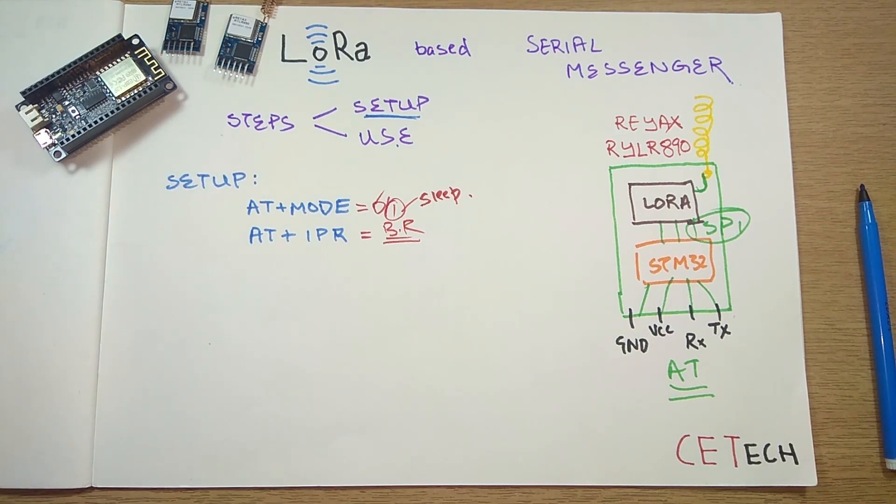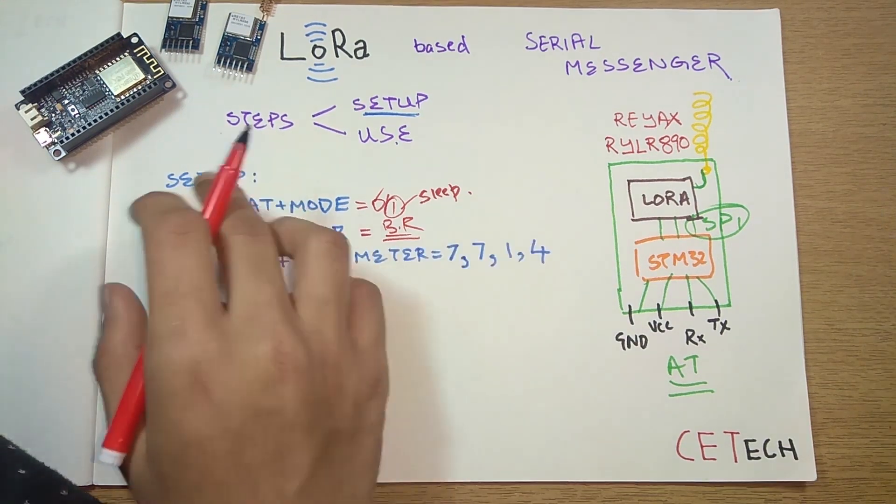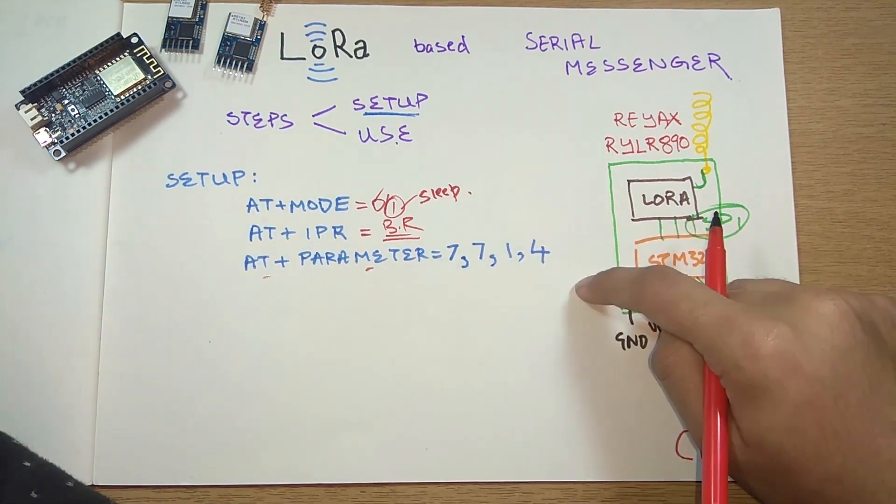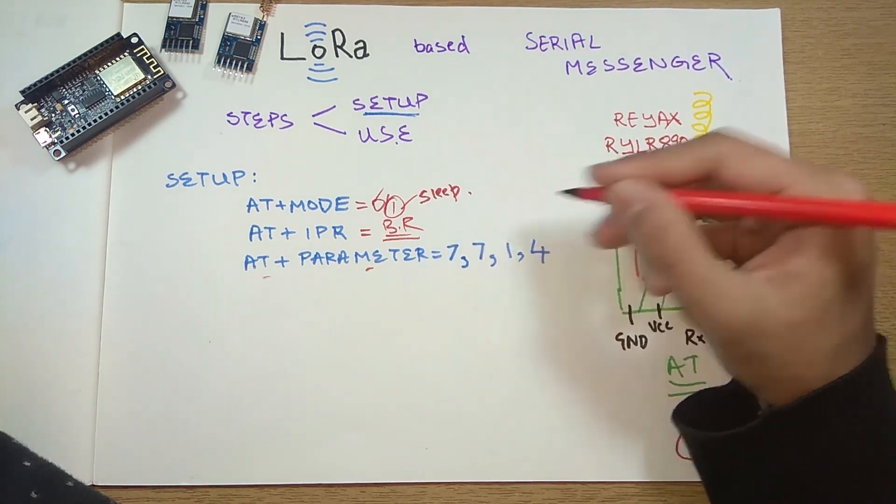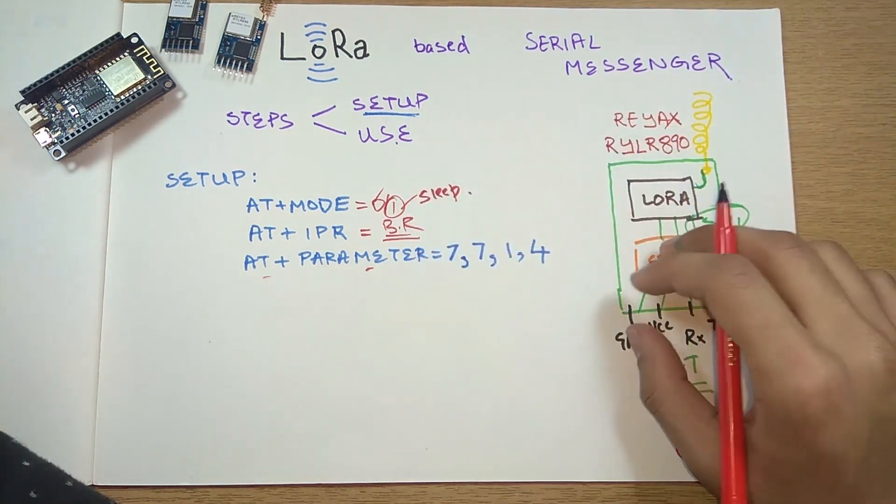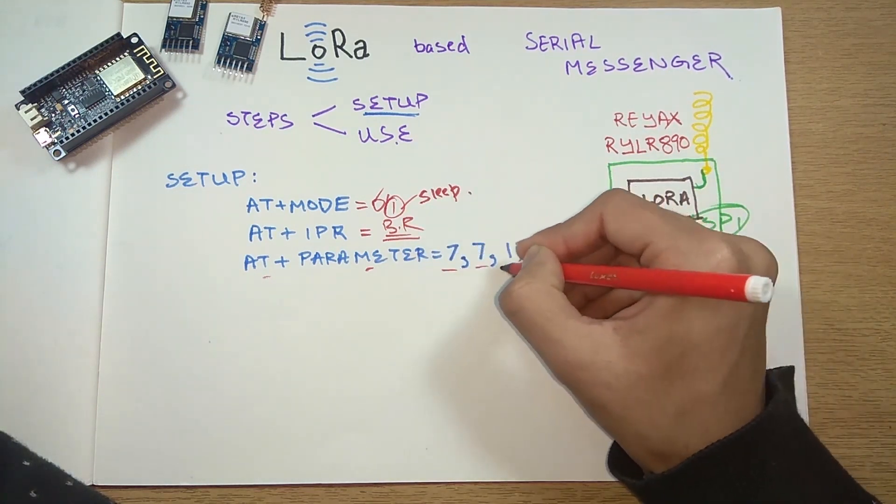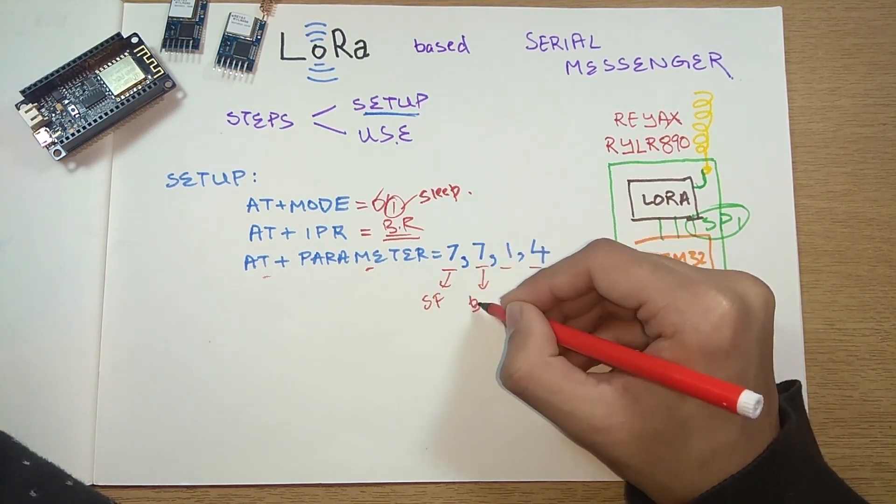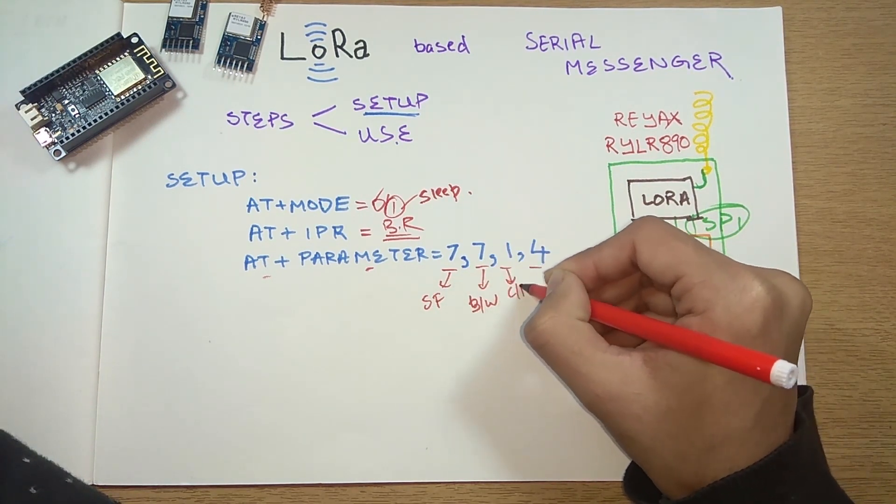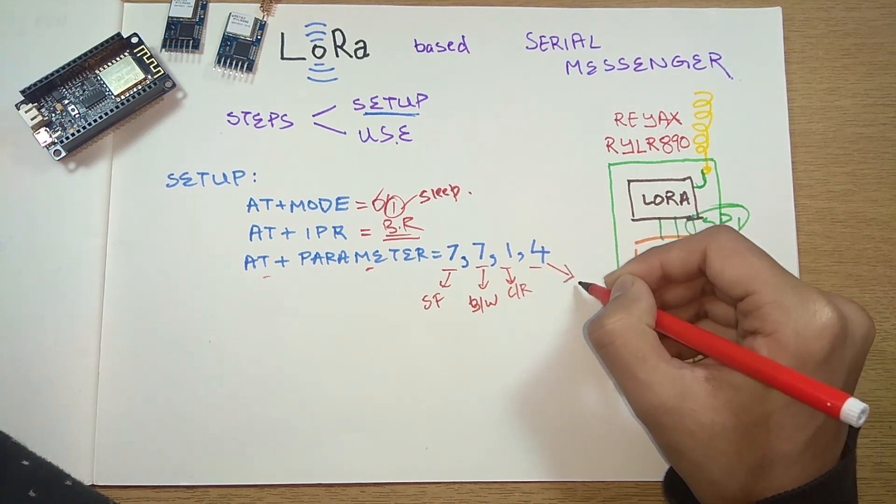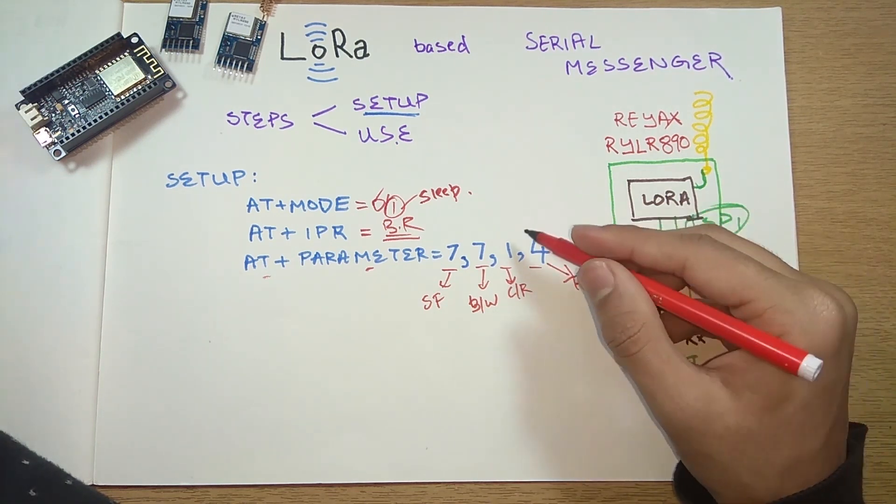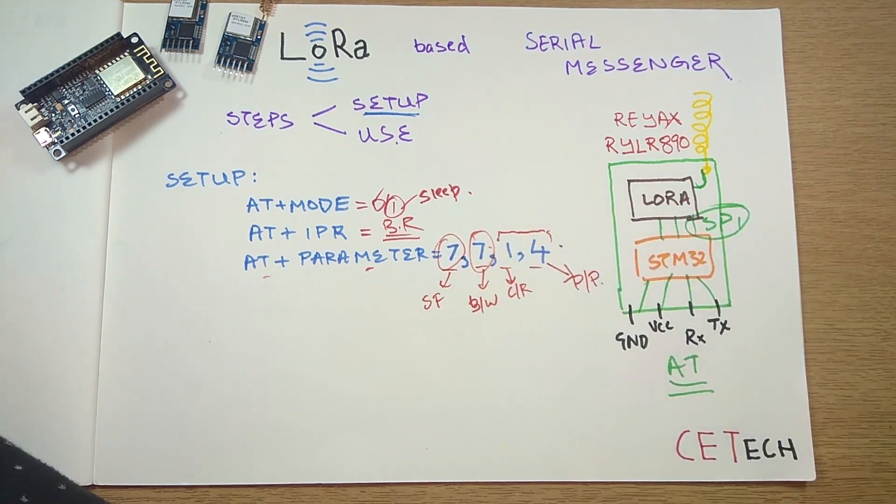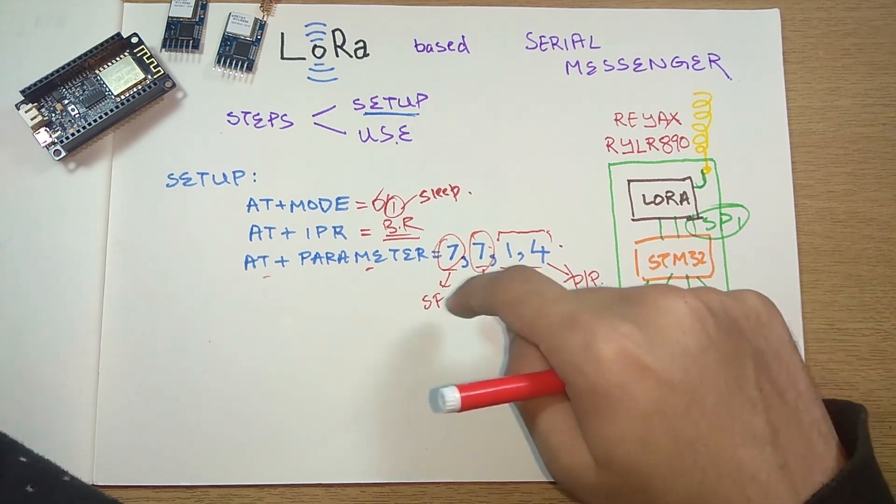The main and most important setup command for the LoRa module is this one: AT+PARAMETER. This entire command will tell in what physical aspect this module will work. These are four aspects. The first tells the spreading factor, the second tells the bandwidth, the third tells the coding rate, and the fourth tells the programmable preamble. We don't give much importance to this, but these two factors - bandwidth and spreading factor - are of very much importance because both will decide how much information you can send through this LoRa module.